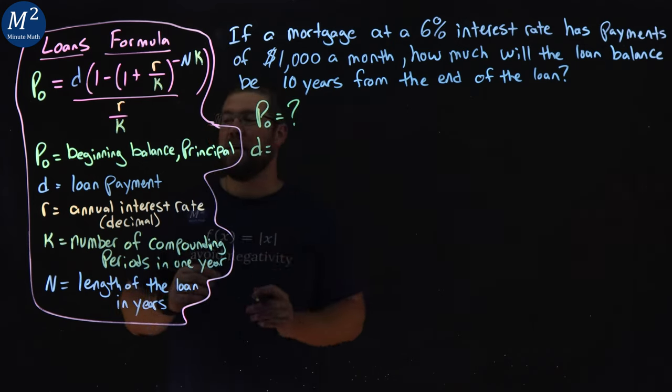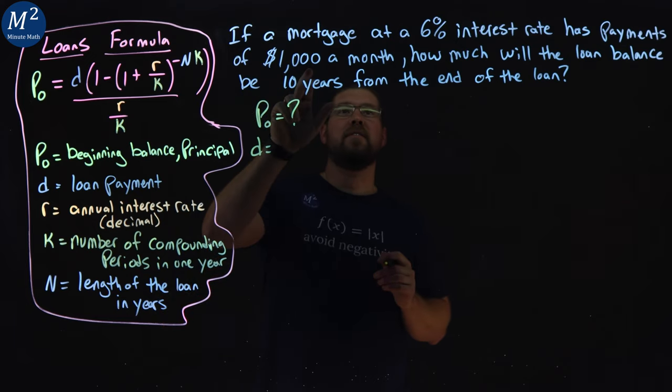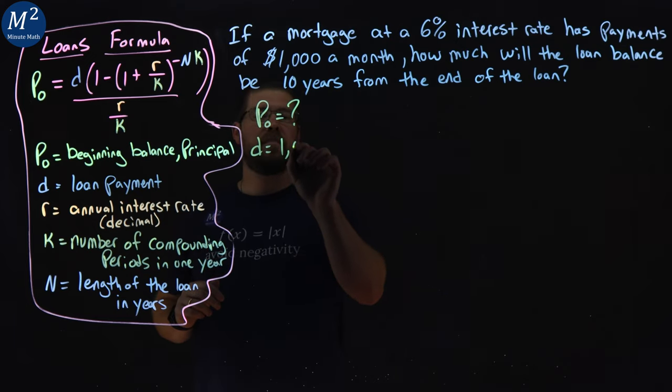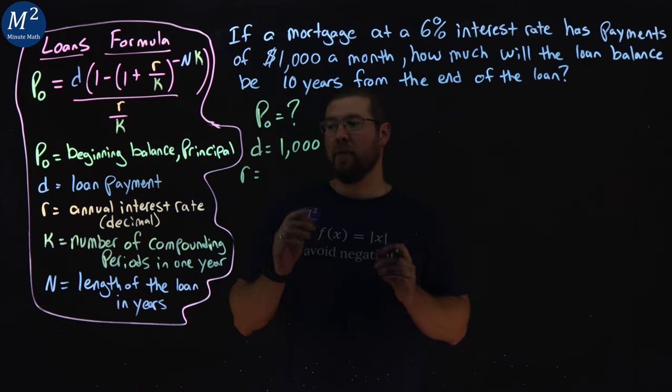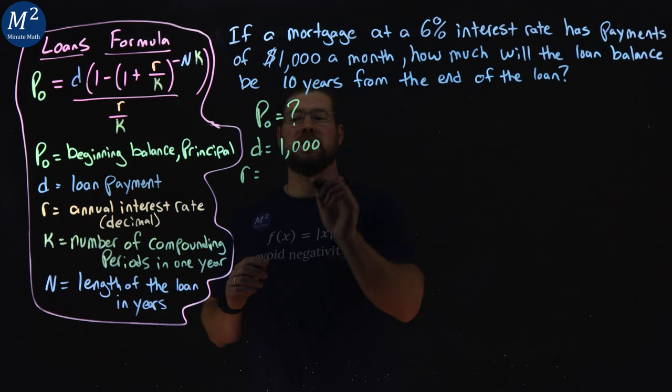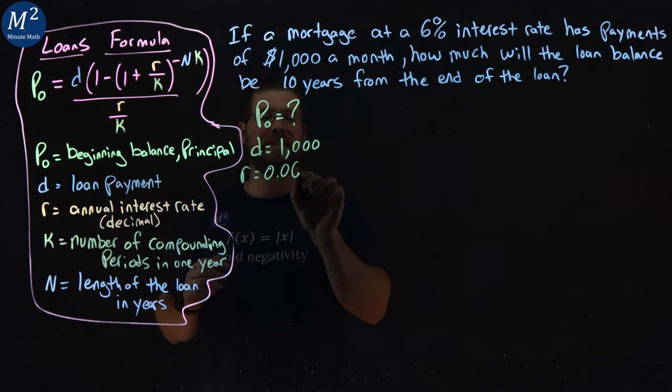Our D is our loan payment, and it's $1,000 a month. Our r is our interest rate as a decimal, so 6% is 0.06 here.